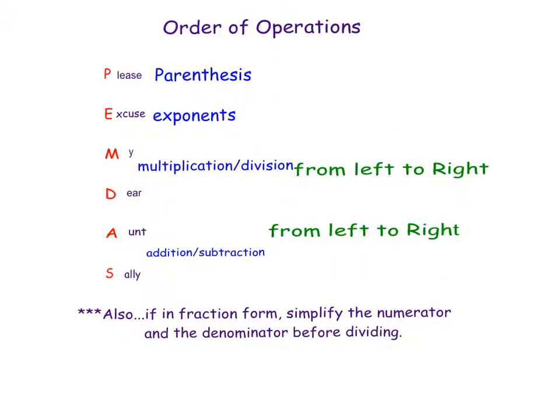So really this is just about practicing order of operations, which you learned a few years ago. Order of operations tells us the order that we have to remember when simplifying. So please excuse my dear aunt sally: parentheses, exponents, multiplication division from left to right, and addition subtraction from left to right. These order of operations don't go away. When you are in algebra 2, you're going to start the year reviewing these. I also want to remind you that if it's in fraction form, you need to simplify the numerator and then the denominator before doing the division.